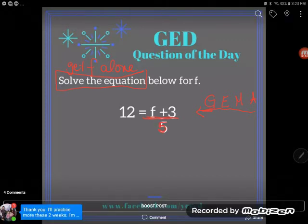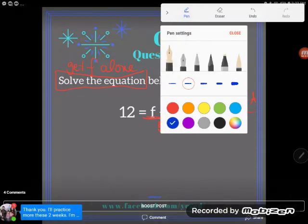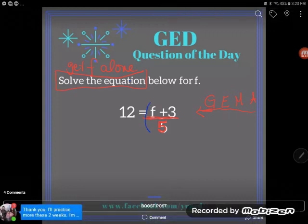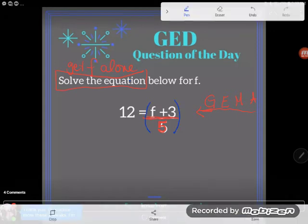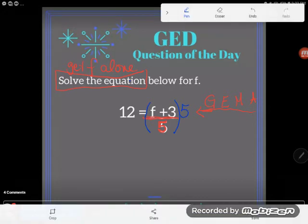In order to get rid of something in math, you always do the opposite. So guys, what is the opposite of divide by 3? Well, I hope you know that it's multiply. I'm sorry, the opposite of divide by 5. I hope you know that it's multiply by 5.